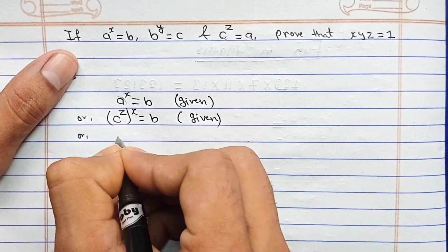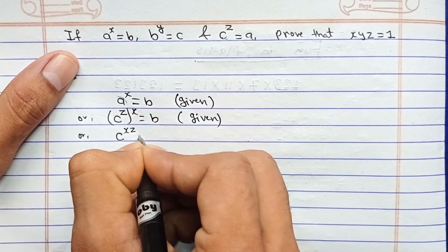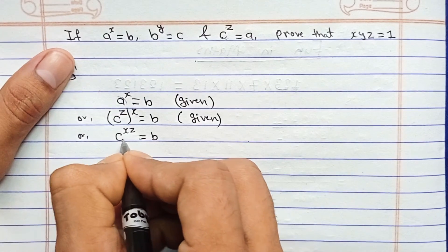And you can write this as c to the power... power to the power get multiplied, so xz equals to b. And in place of c,